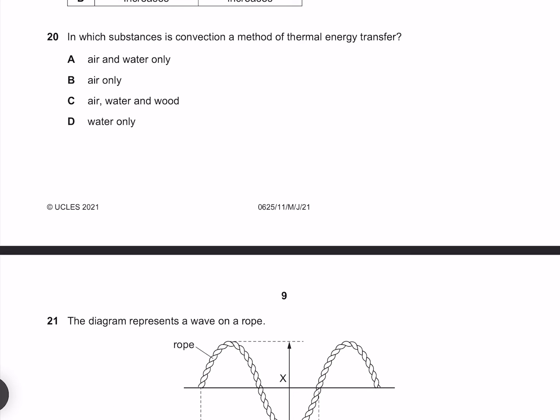In which substances is convection a method of thermal energy transfer? Convection only occurs in fluids, which includes both air and water, so it's not these two, and it does not include wood, which rules out C. So our answer must be A.